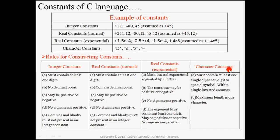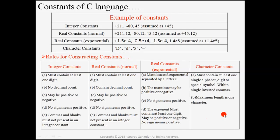For character constants: must contain at least one single alphabet, digit, or special symbol enclosed in single inverted commas. The maximum length is one character — you cannot write a whole word inside single inverted commas. You have to write a single character like 's' or 'd' in single inverted commas.